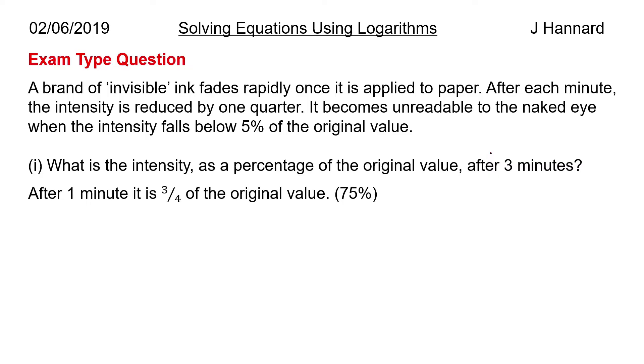Well, what we have to do here is look at after three minutes. So after one minute it's three quarters of its original value, i.e. 75 percent, because it said after each minute the intensity is reduced by one quarter. So if I've got a whole pie and I reduced it by a quarter, what have I got left? Three quarters. So now the starting point is three quarters. So after two minutes I then have a quarter less of three quarters, so try and get that into your head. I have a quarter less of what I have, which is 75 percent. I have a quarter less of 75 percent, so that's going to be three quarters of three quarters, i.e. three quarters squared, which is nine sixteenths, which is 56 percent.